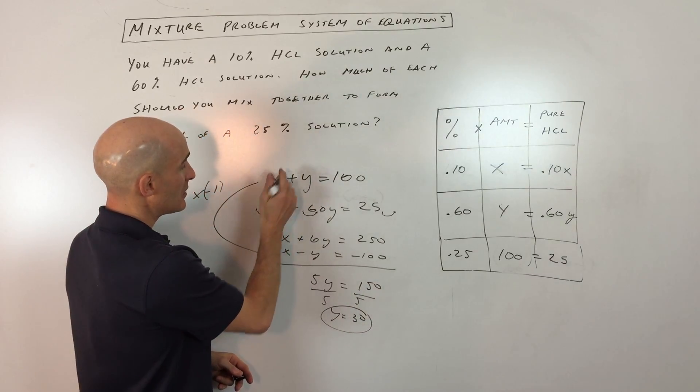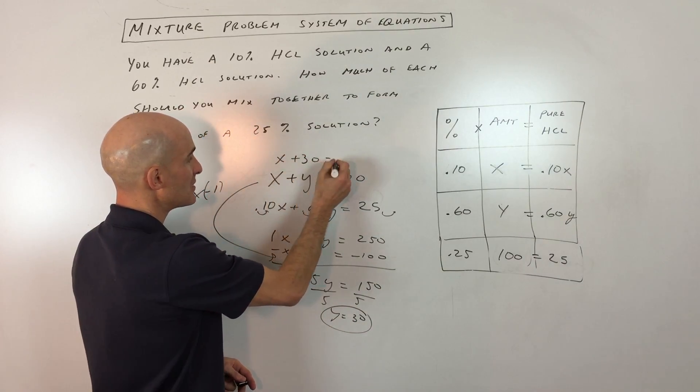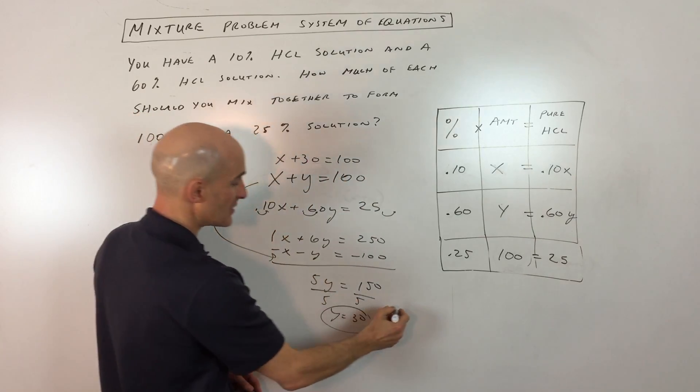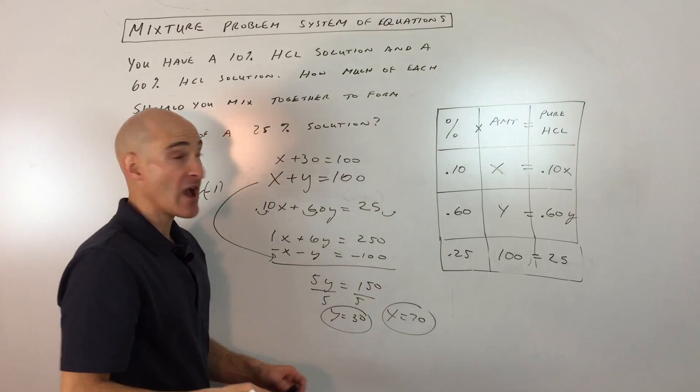If we put that back in here, you can see X plus 30 equals 100. So if you subtract 30 from both sides, you can see that X is going to equal 70 milliliters. And so you've got it.